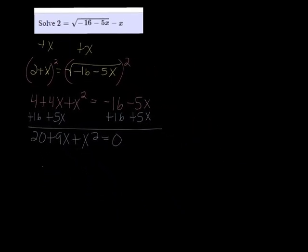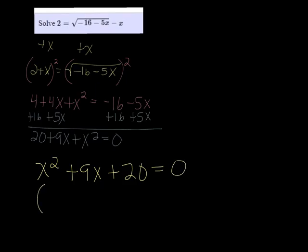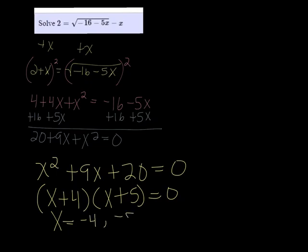I'm going to rewrite it so it's in the right order: x squared plus 9x plus 20 equals 0. This is factorable. It's going to be x plus 4 times x plus 5 equals 0, giving us answers of negative 4 and negative 5.